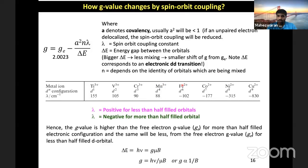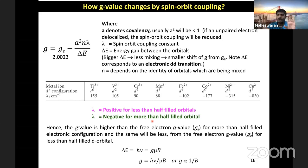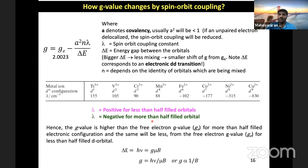For more than half-filled configurations, the spin-orbit coupling constant is negative, so negative times negative gives a positive term, and the G value will always be greater than 2.0023. Out of the 8 different paramagnetic transition metal ions, just by looking at the G value you can narrow down: if G is less than 2.0023, it is a less than half-filled configuration; if G is greater than 2.0023, it is a more than half-filled configuration. Half-filled configurations have no orbital angular momentum and are spin-only systems.